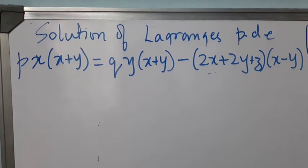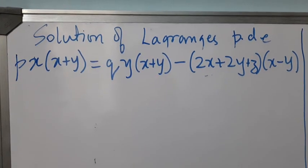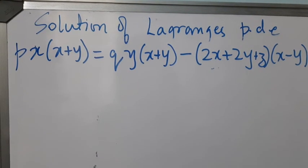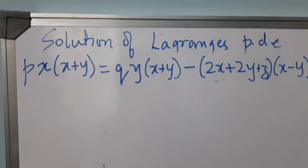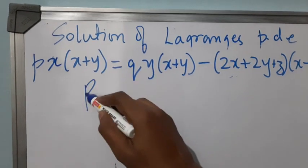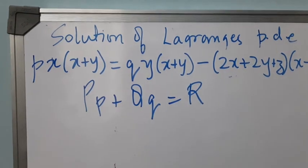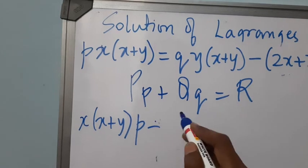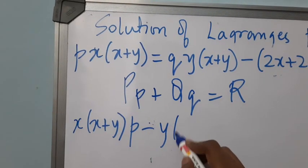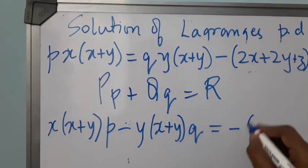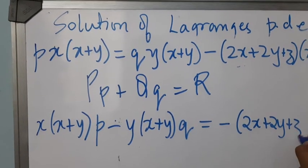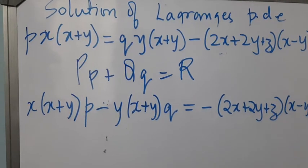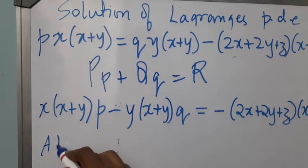Hello students, this is a lecture on solution of Lagrange's PDE. We will be solving a few more examples on choosing multipliers for solving Lagrange's PDE. The given PDE is not in the standard form of PP plus QQ equal to R, so we have to rearrange this to get X(X+Y)·P minus Y(X+Y)·Q equal to minus 2X plus 2Y plus Z into X minus Y. This is now the standard form.